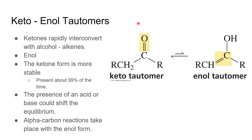Here is a ketone, and you can see the normal carbonyl group we're used to seeing. This is in a rapid equilibrium with an enol — the name comes from alkene and alcohol combined. Of the two, the ketone is much more represented at equilibrium than the enol.